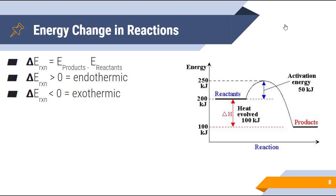The delta E of the reaction is equal to the energy of the products minus the energy of the reactants. If delta E is positive — meaning there is more energy in the products than in the reactants — then the reaction is endothermic. If delta E is negative — meaning there is more energy in the reactants than the products — then the reaction is exothermic.